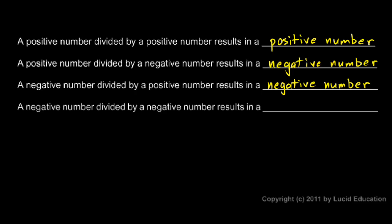And the last one: a negative number divided by a negative number — think of this as two negative numbers. An even number of negative signs results in a positive number. So rather than trying to memorize these four rules, think of it just like we did when multiplying — think of the number of negative signs. An even number of negative signs cancels out.